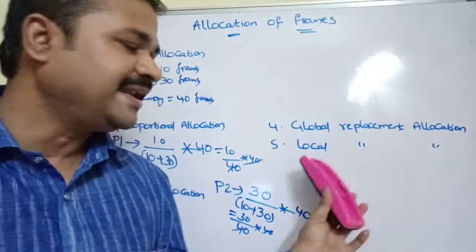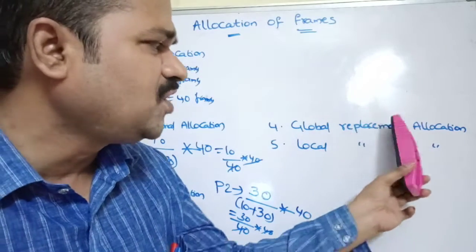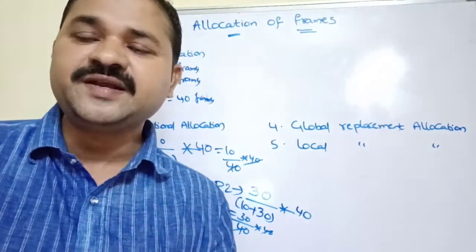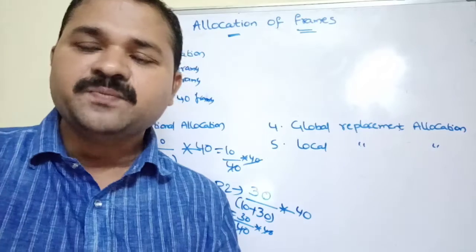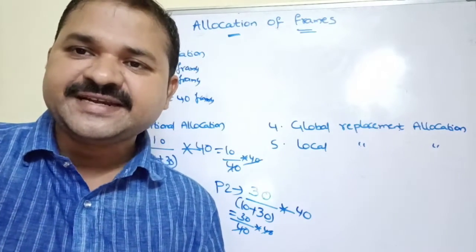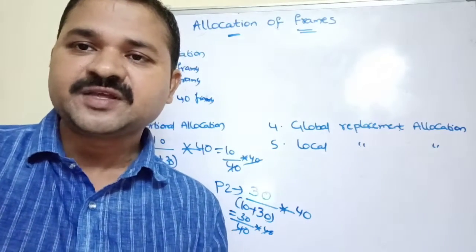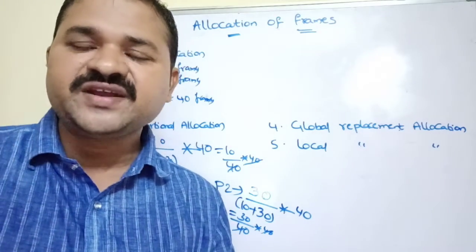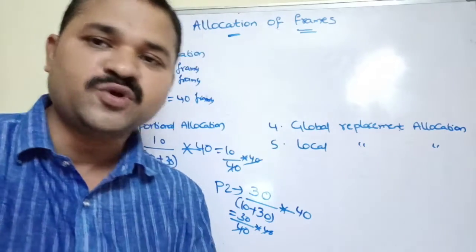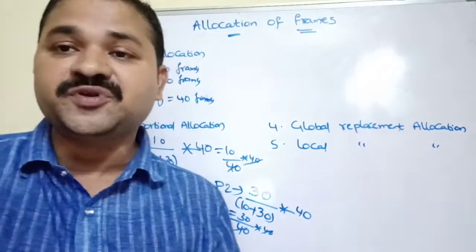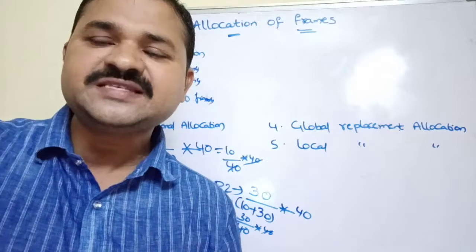Now let's see about global replacement allocation and local replacement allocation. This is mainly useful while performing the replacement. We know what replacement is — whenever the CPU needs to execute a page, it checks whether that page is present in main memory or not. If the page is present, the CPU executes it. If the page is not present, it is called a page fault. Whenever a page fault occurs, the operating system loads that page from secondary memory to primary memory. But if the main memory is completely full, we have to replace one of the pages in main memory in order to store the new page from secondary memory.